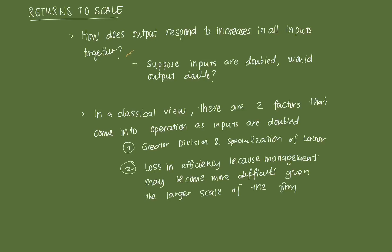Suppose inputs are doubled — would output also double? If I doubled the amount of all inputs, how much would the increase in output be? Would it be double as well, more than double, or less than double?